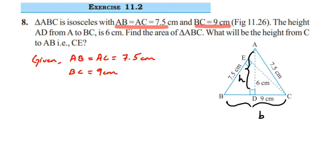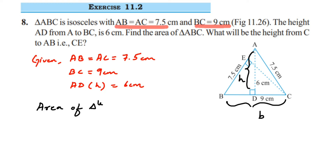In this triangle we have two heights. To get the area of the triangle we want a height whose value we know. AD we know which is 6 cm — it's the height making 90 degrees with the base BC which is 9 cm. We're going to use these two to find the area of the triangle. Area of triangle is half into base into height.